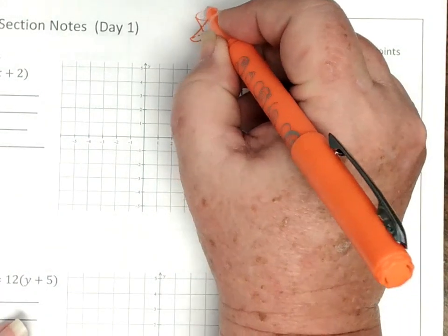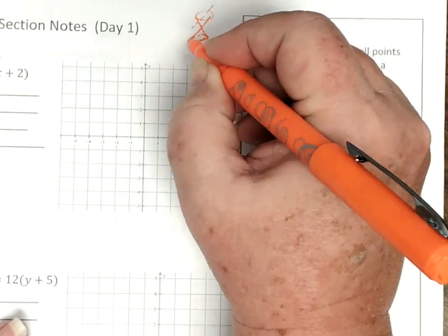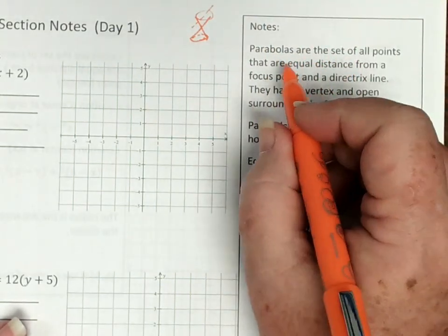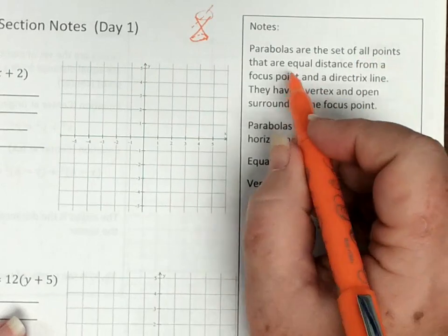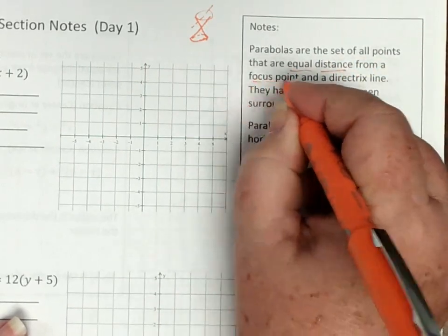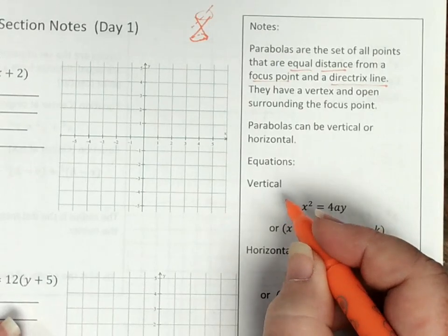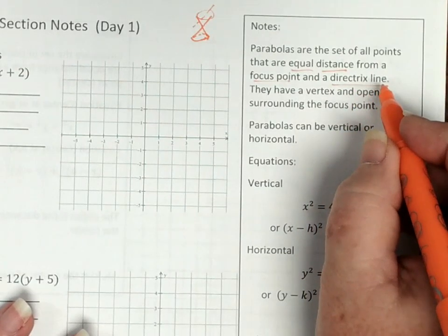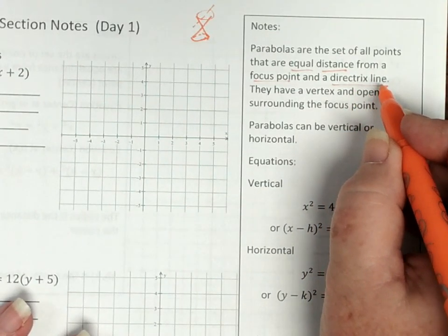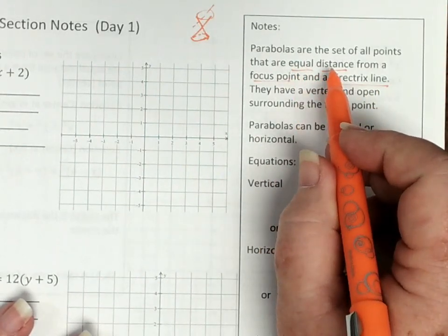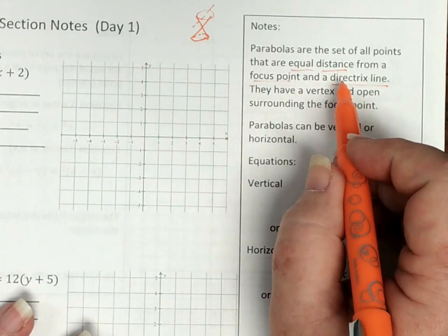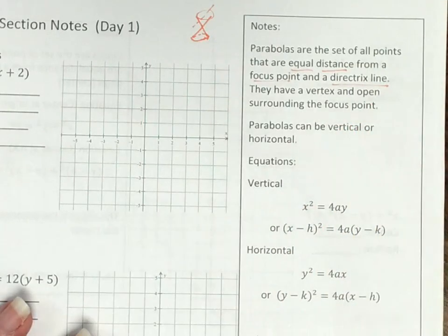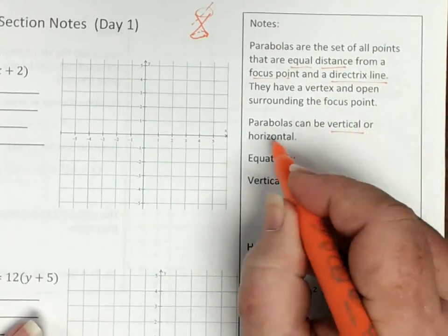If I slice the cone at a diagonal that is parallel to this edge of the cone right here, we create a shape called a parabola. The parabola is a set of all points equal distance from a focus point and a directrix line. A focus point is just a point on the graph, and a directrix line is a line, either vertical or horizontal. If we were to measure every single point equal distance from the focus and the directrix, we would create a parabola.